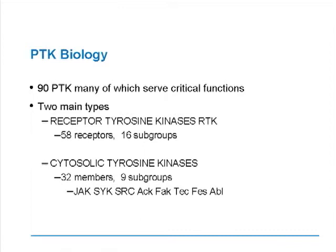There are over 32 members of the cytosolic tyrosine kinase family formed into nine subgroups. Within these subgroups are the JAKs, both of which you've probably heard of because of the molecules in late-stage development, as well as numerous other forms and subgroups.